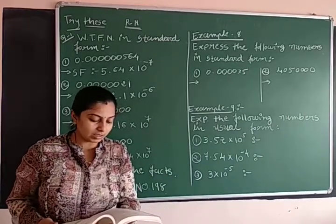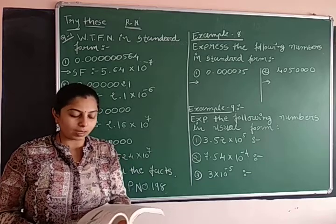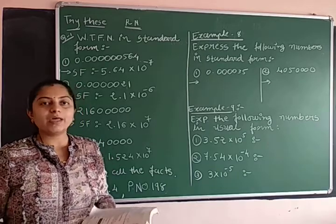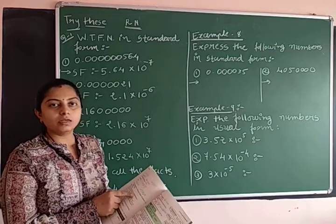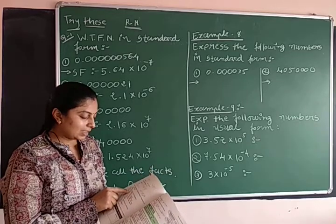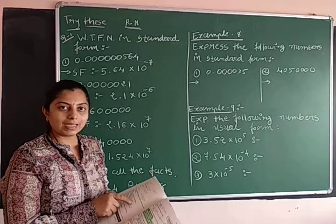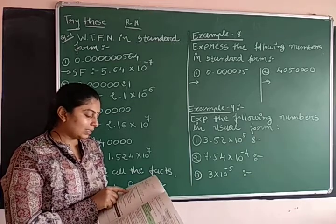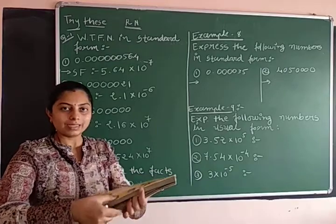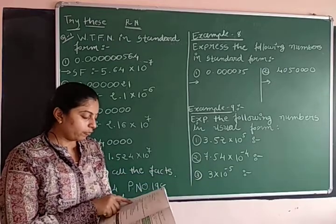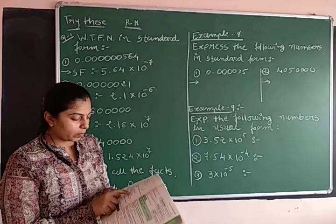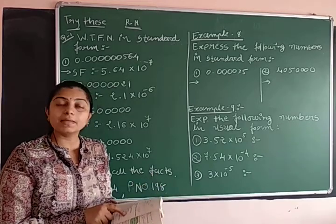Topic number 12.4, 12 facts are given. First one: the distance from the earth to the sun is 149,600,000,000 meter. The distance of sun from the earth is given. Second point, speed of light is given, that is 300 million meter per second. Third point, thickness of class 7 mathematics book is 20 millimeter.